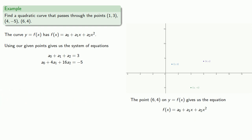And finally, the point (6, 4) on y equals f(x) gives us another equation. And that gives us a system of three equations in three unknowns.